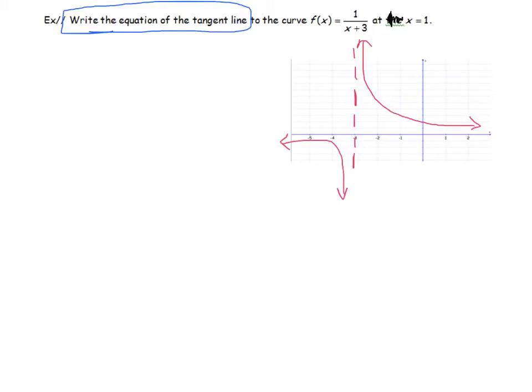We're looking for the equation of the tangent line to the curve at x equals 1. So there's x equals 1. And the tangent line is the line that just touches the curve at that one point. So there's a tangent line.